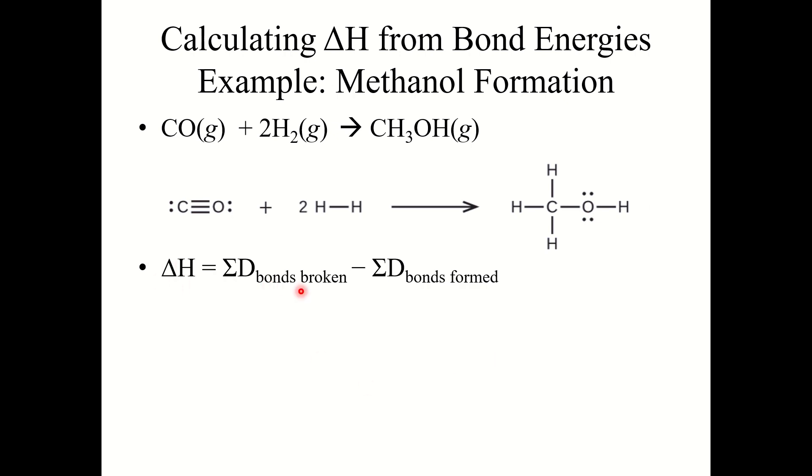Delta H equals the bonds broken minus the bonds formed. For the bonds broken, this is one carbon to oxygen triple bond plus two hydrogen to hydrogen single bonds, minus the sum of the bonds formed.